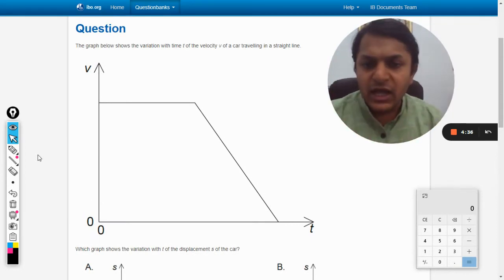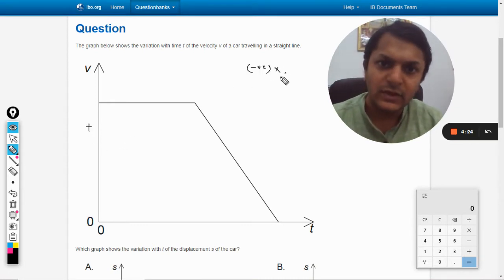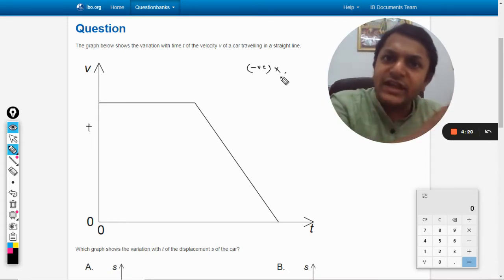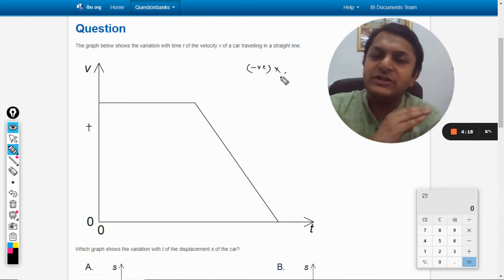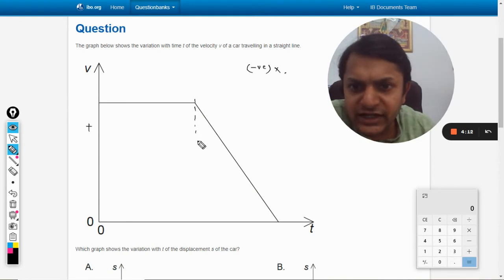Now velocity and time graph is given. As it is evident from the graph, you can see that number one: velocity is always positive, it is never negative. So it is not changing the direction of the motion, it is moving in one side only and it is not moving backwards, so it is not returning back.